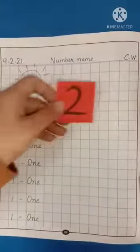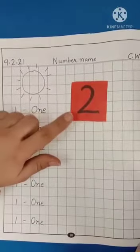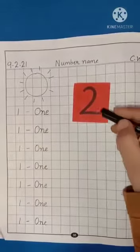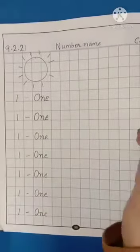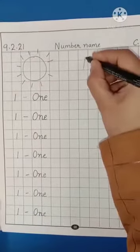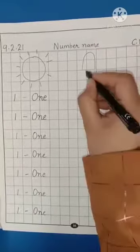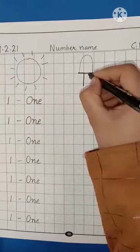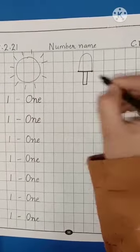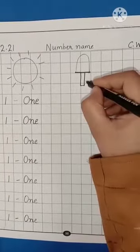Now, children, tell me what is this number? This is number 2. We will draw 2 objects. All of you will draw 2 ice cream with me. Do like this. Sleeping line. 2 standing lines. And this will become our ice cream.